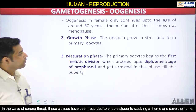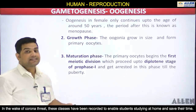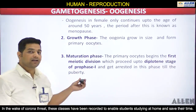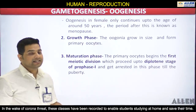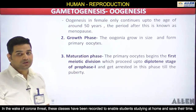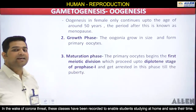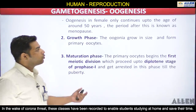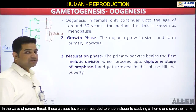Now the growth phase. The 7 million oogonia formed during the embryonic developmental stage grow in size to form a bigger cell. Just as in spermatogenesis the spermatogonia grows, here the oogonia grows in size and forms the primary oocyte.